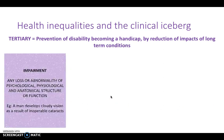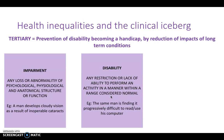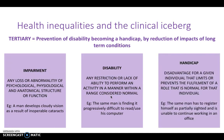Bearing tertiary prevention in mind, consider these three terms. An impairment is a loss or abnormality of psychological, physiological, and anatomical structure or function — for example, a man develops clouded vision as a result of inoperable cataracts. When does it become a disability? When he's restricted or lacks the ability to perform an activity in a manner within a range considered normal — for example, having difficulty reading and using his computer at work. When does it become a handicap? This is a disadvantage for a given individual that limits or prevents the fulfilment of a role that's normal for that individual — for example, the man has to register as partially sighted and is therefore unable to continue working in the office.